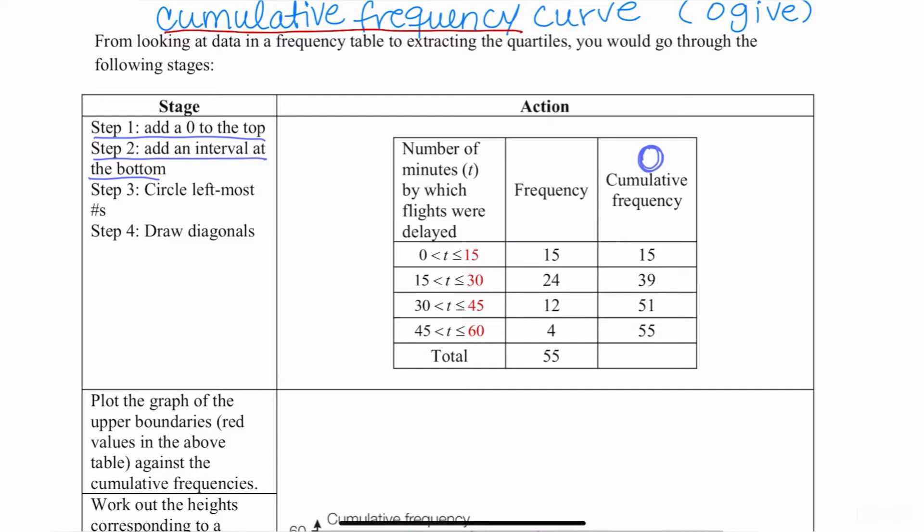Here are my intervals, and I'm going to add an interval to the bottom. And in reality, the only thing I care about is repeating that last number. So I'm going to add 60 is less than or equal to T, and I don't even care what the rest of it is because I just really need that 60. I'm going to circle the leftmost numbers.